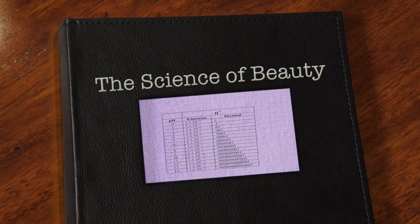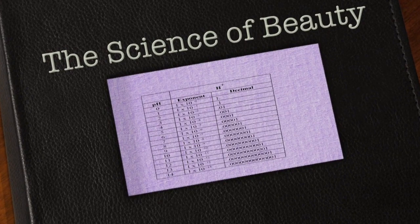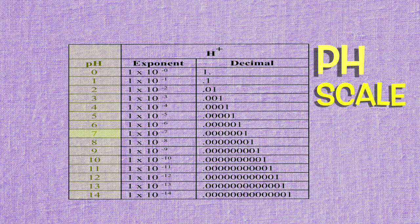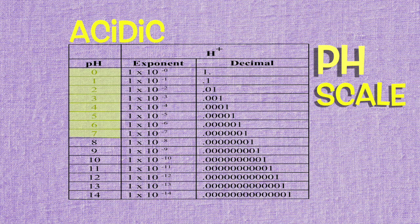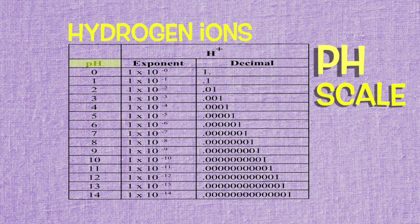To really understand what pH is, we're going to have to look at the numbers we use to measure pH on the pH scale. Don't let this chart intimidate you — it will all make sense when we're finished. The far left column is the pH scale. pH 7 is neutral, pH 0 to 7 is acidic, and pH 7 to 14 is alkaline. pH measures the quantity of hydrogen ions.